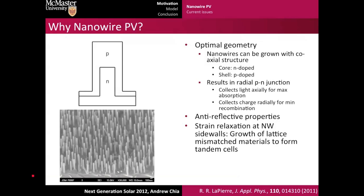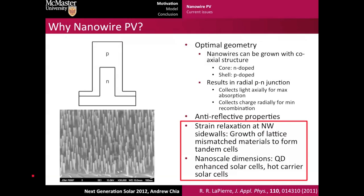Due to the small size of the nanowires, it allows for strain relaxation along the nanowire sidewalls. That opens up the door for the growth of 3-5 nanowires on silicon or any lattice mismatched substrate. That gives promise for a two-junction solar cell with a bottom cell of silicon and a top cell made of nanowires. The nanoscale dimensions also hold promise for quantum dot-enhanced solar cells and hot carrier solar cells. We must note that these last two properties are only accessible if we use nanowires and not something like microwires.